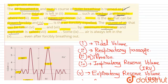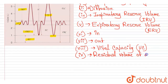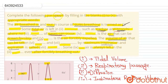The next sentence is: some dash air is always left in the dash, even after forcibly breathing out. This refers to residual volume — the volume of air that still remains in the lungs after the most forceful expiration. So number nine will be residual volume and number ten will be lungs.